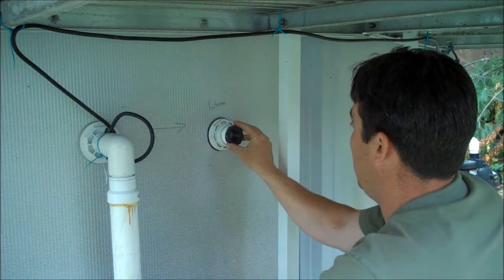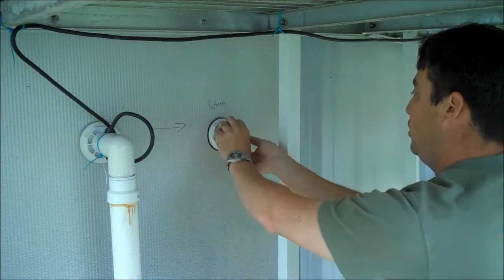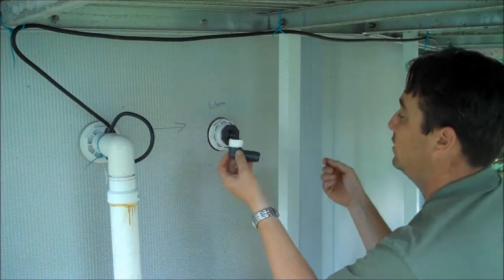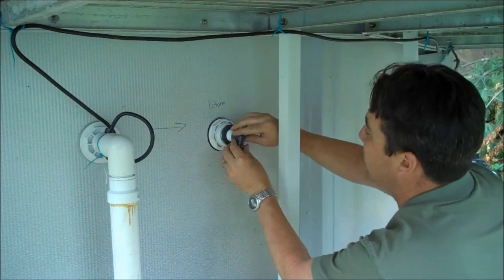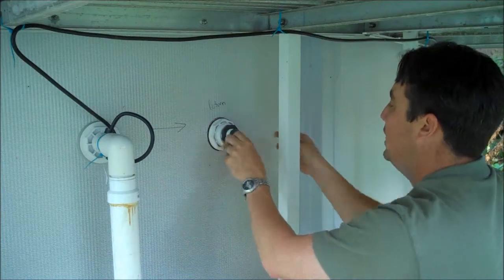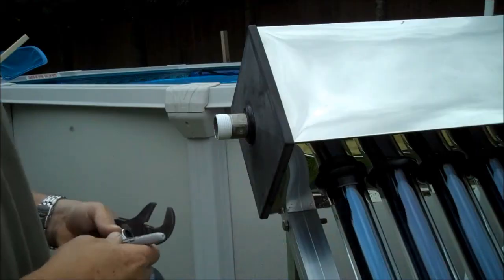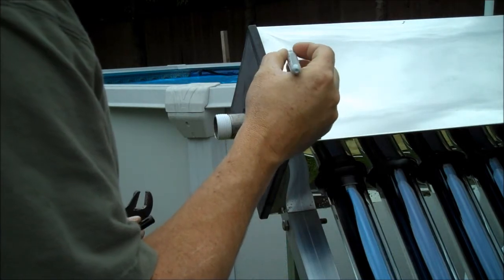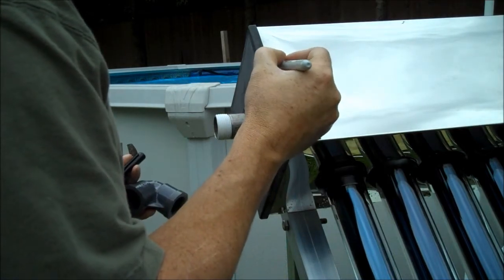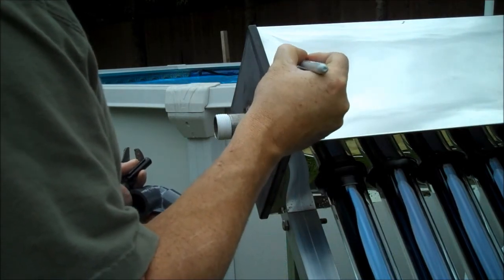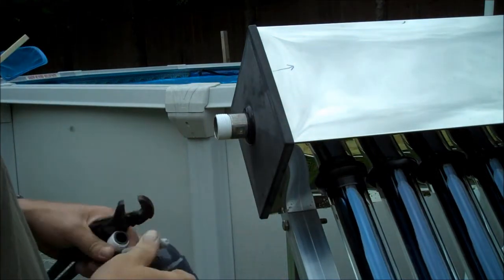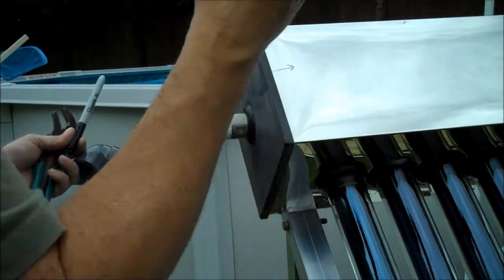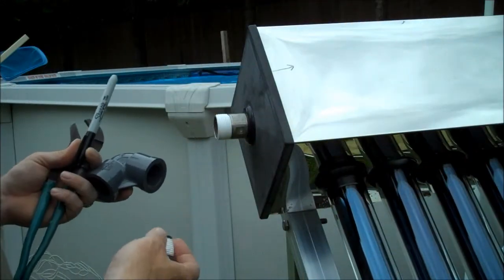The first piece is an inch and a half by one inch bushing. Next is a one inch male by barb 90. This will be the side the cold water is going into. This is also the farthest part from the pool. So we want the cold water going in from the furthest part, the hot water at the closest, the shortest distance to the pool.